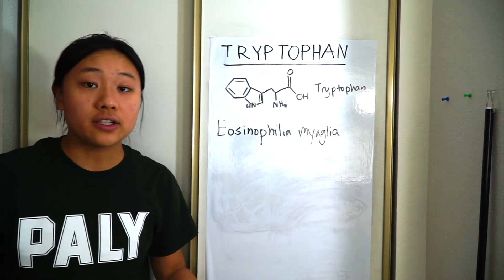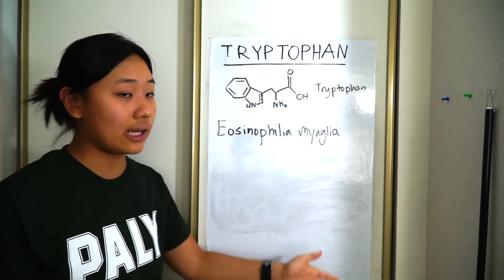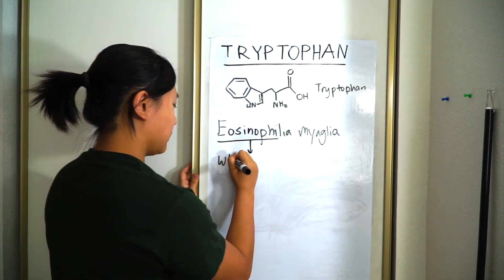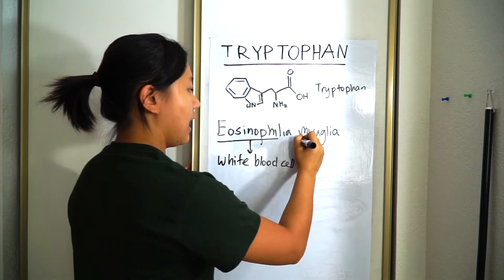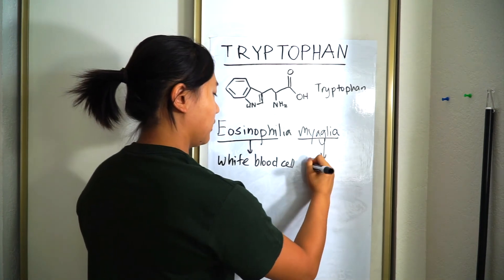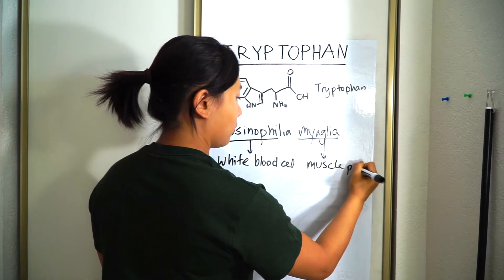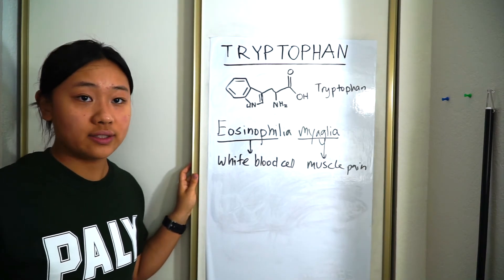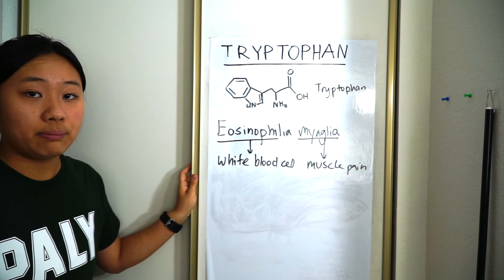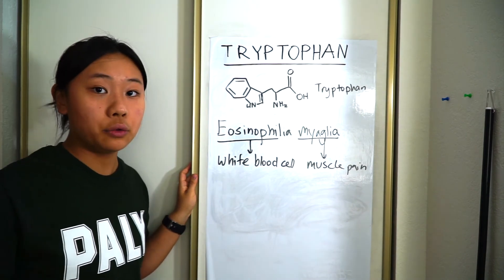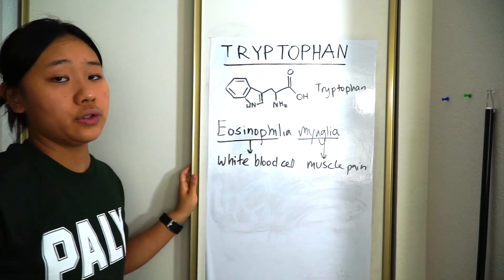Finally, there's this condition where if you have too much tryptophan, it results in eosinophilia myalgia. Eosinophilia means there's an overabundance of white blood cells in your body and that can cause flu-like symptoms. Myalgia means muscle pain, so you also get muscle pain — which is what myalgia refers to.